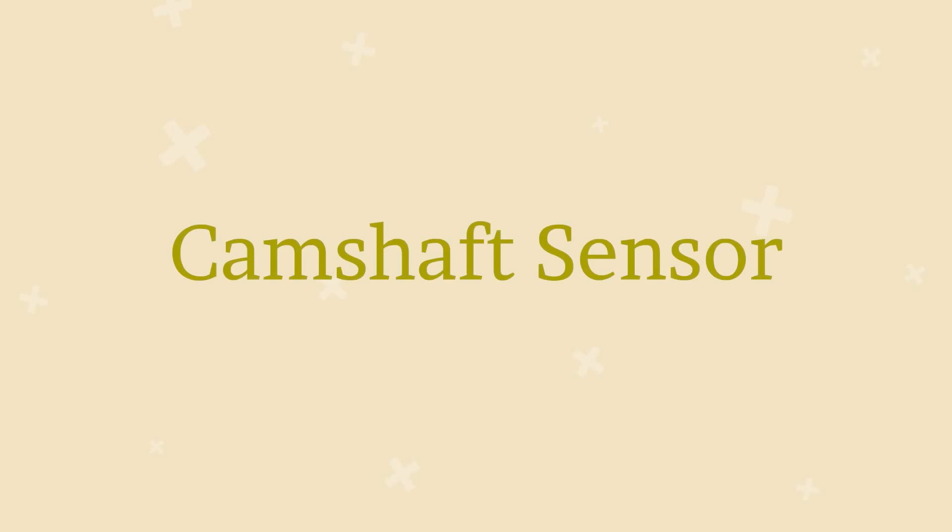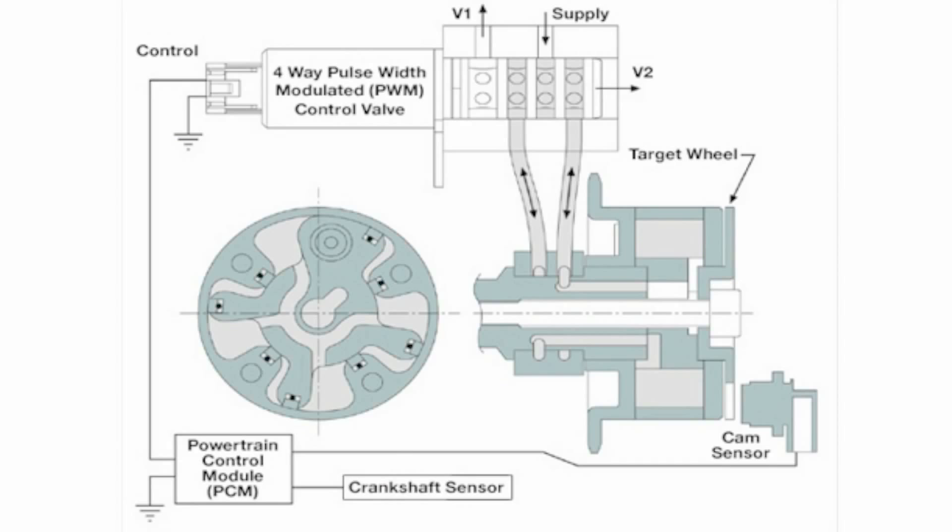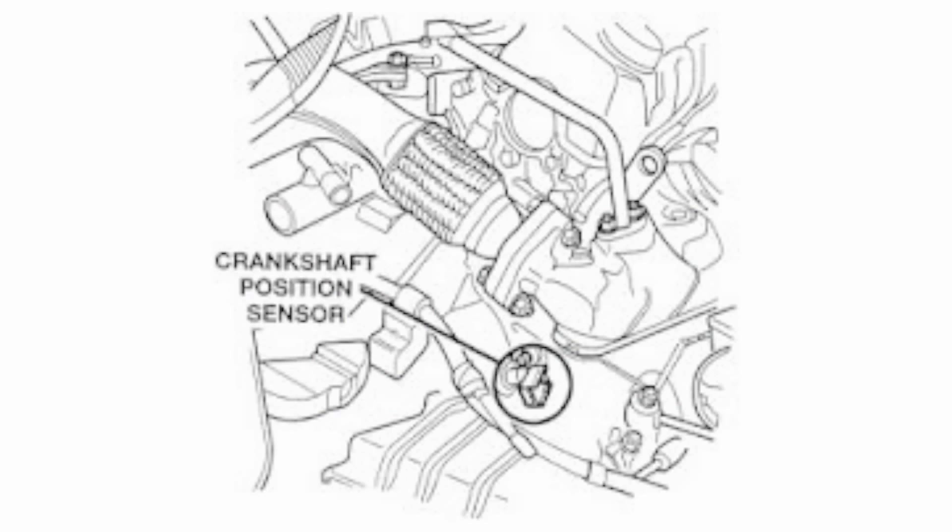Camshaft Sensor. It is an electromagnetic sensor which produces voltage when a metal object moves past it. The sensor contacts with ECM for position of camshaft. It is fixed at the end of camshaft.